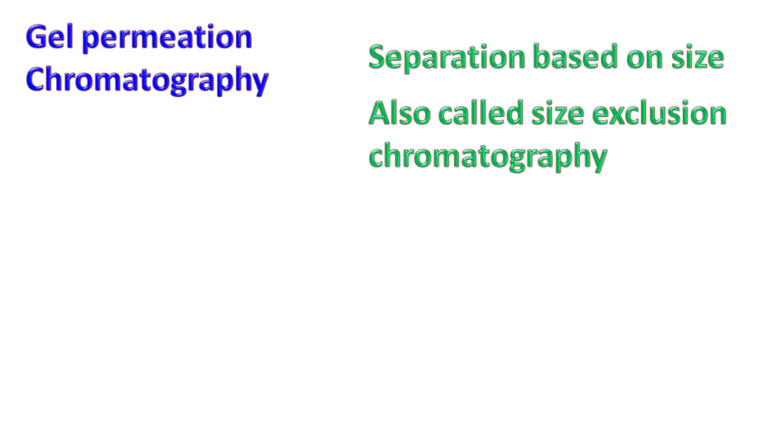Gel permeation chromatography is a technique in which separation of molecules occurs based on the size. It is also known as size exclusion chromatography.